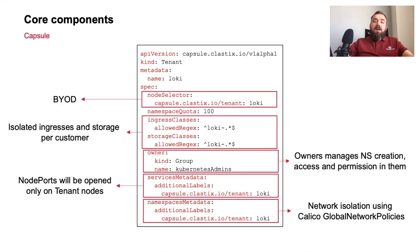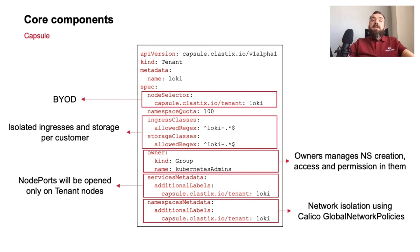The next core component is Capsule. The first thing Capsule helps us with is implementing the Bring Your Own Device approach. When a node is registered in Kubernetes, we add a label with the name of the tenant on it, then we use Capsule's node selector to ensure that tenant workloads run only on dedicated tenant node groups. We were also able to get rid of shared ingresses — when a customer creates a node group with ingress role, the provisioner creates a dedicated ingress class for it, and Capsule forces applications in the tenant to be published only by the assigned ingress controllers.